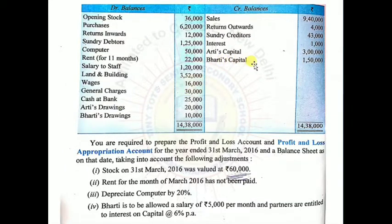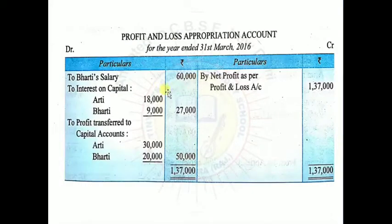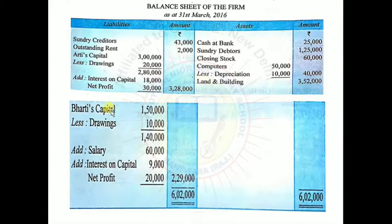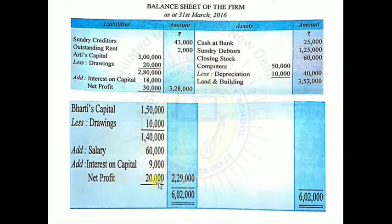Bharti's capital: opening capital Rs.1,50,000, less drawings Rs.10,000, plus salary Rs.60,000, plus interest on capital Rs.9,000, plus share of profit Rs.20,000 — Bharti's final capital = Rs.2,29,000. Total of assets and liabilities both come to Rs.6,02,000, confirming the balance sheet is balanced.